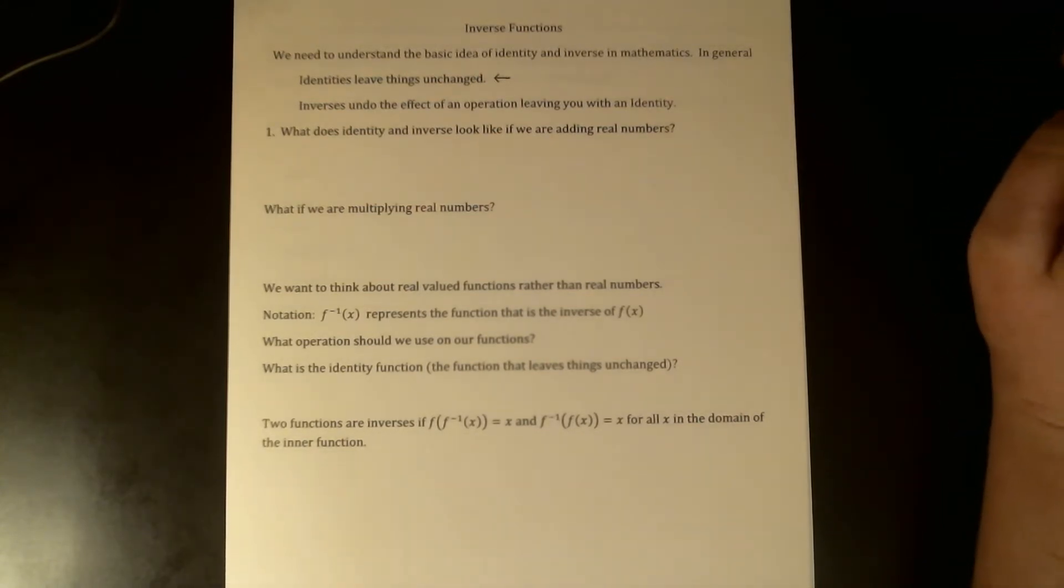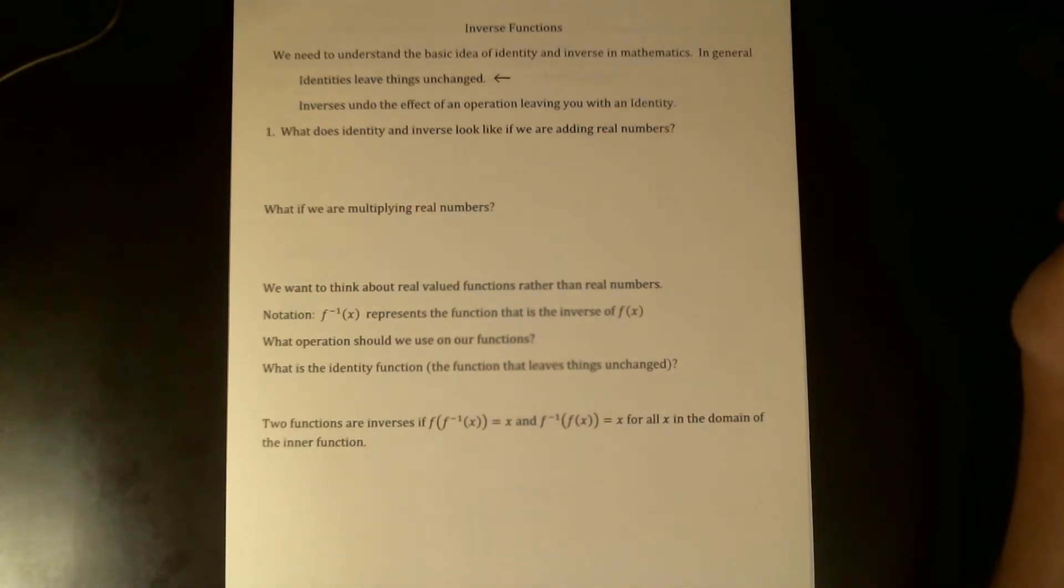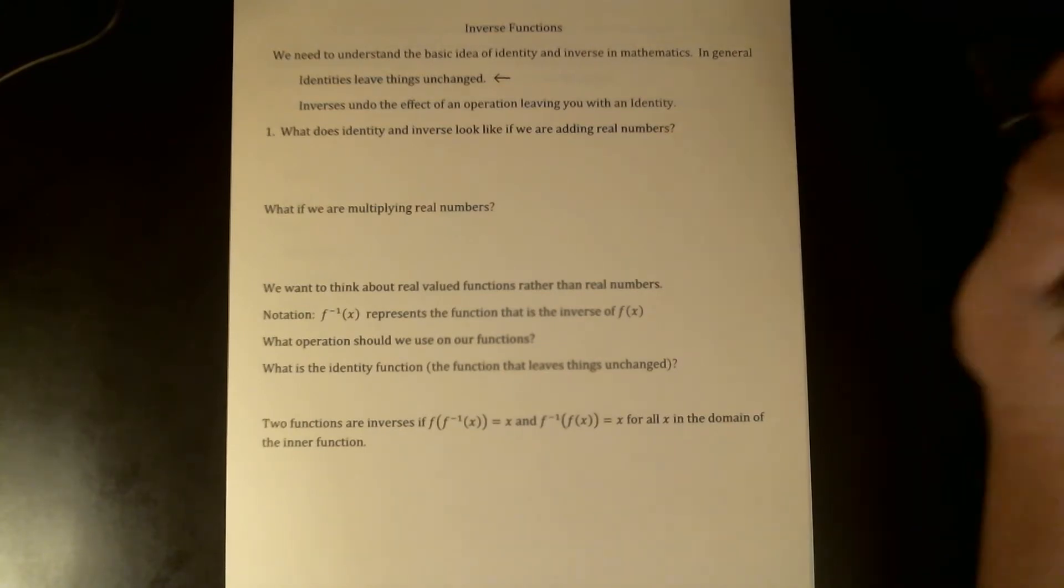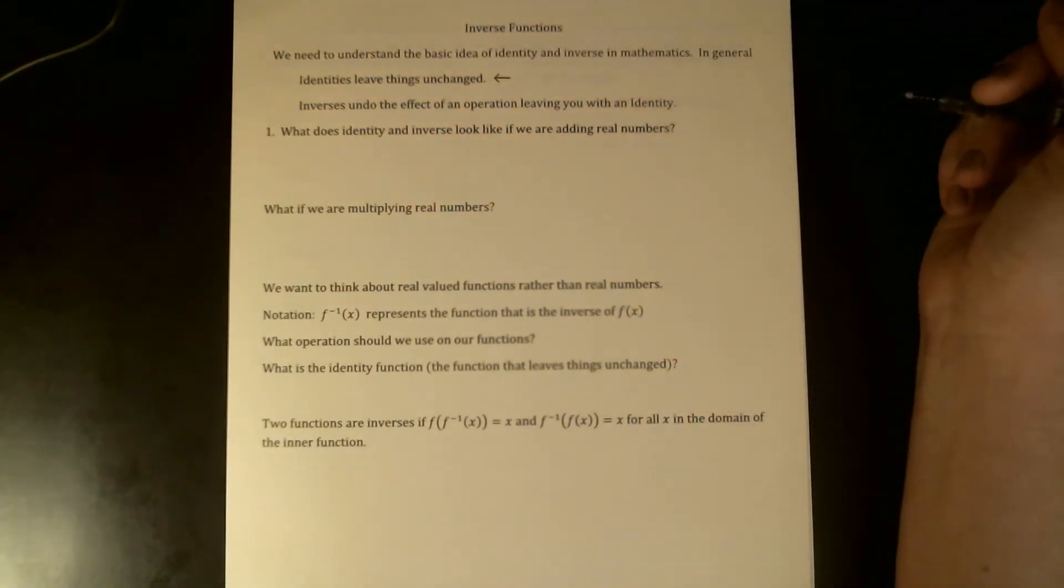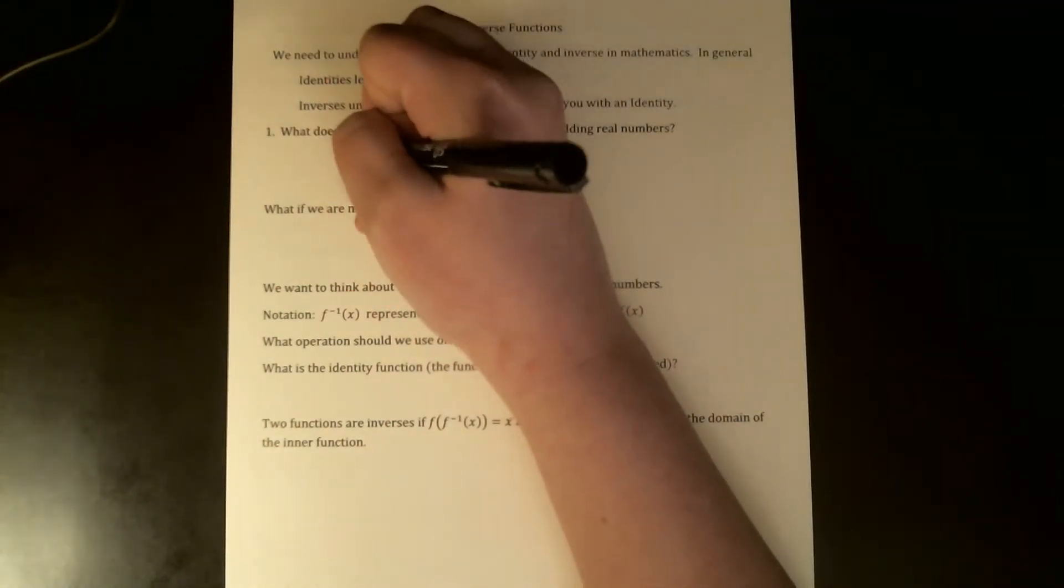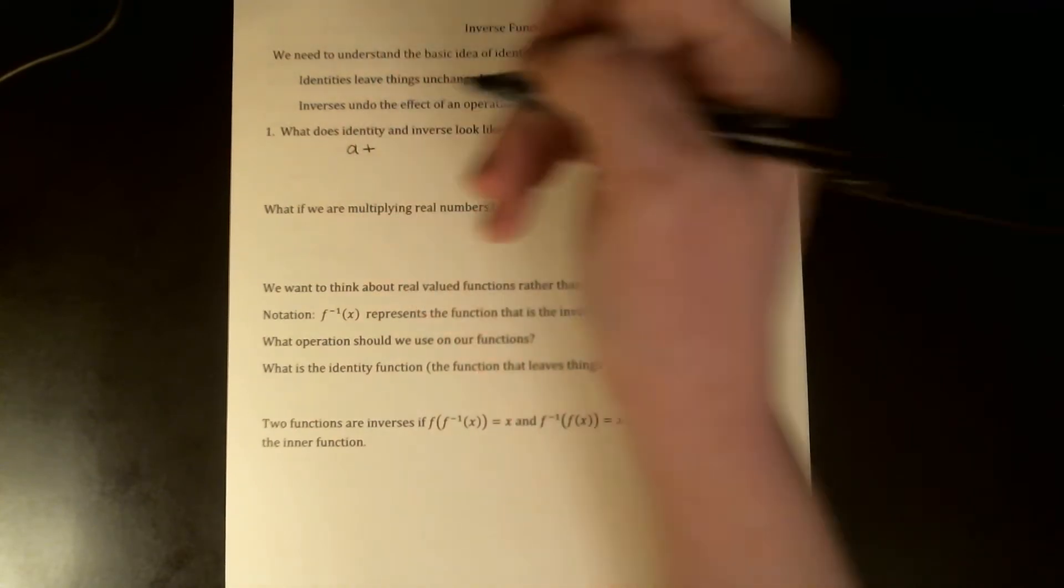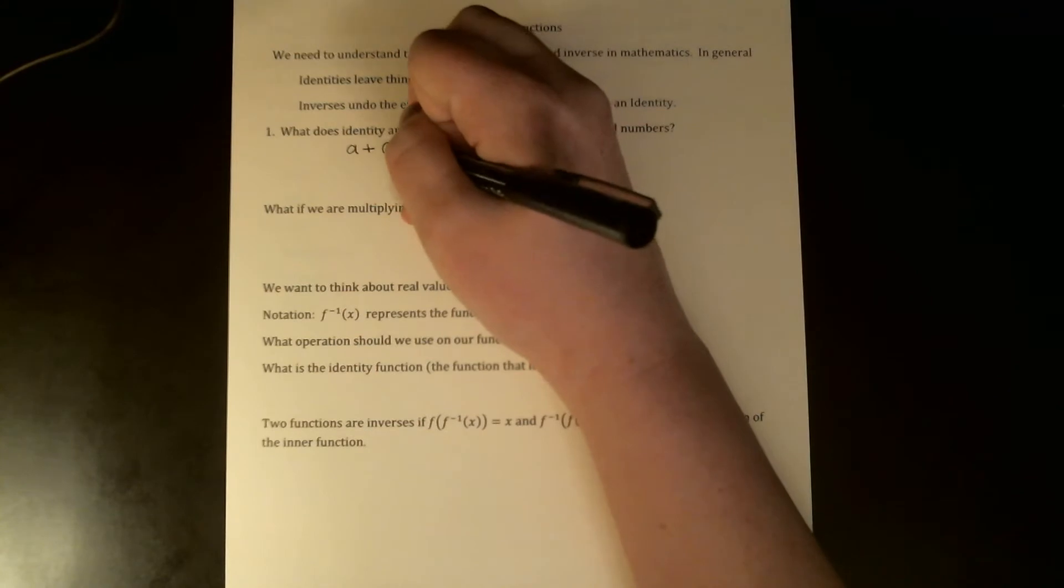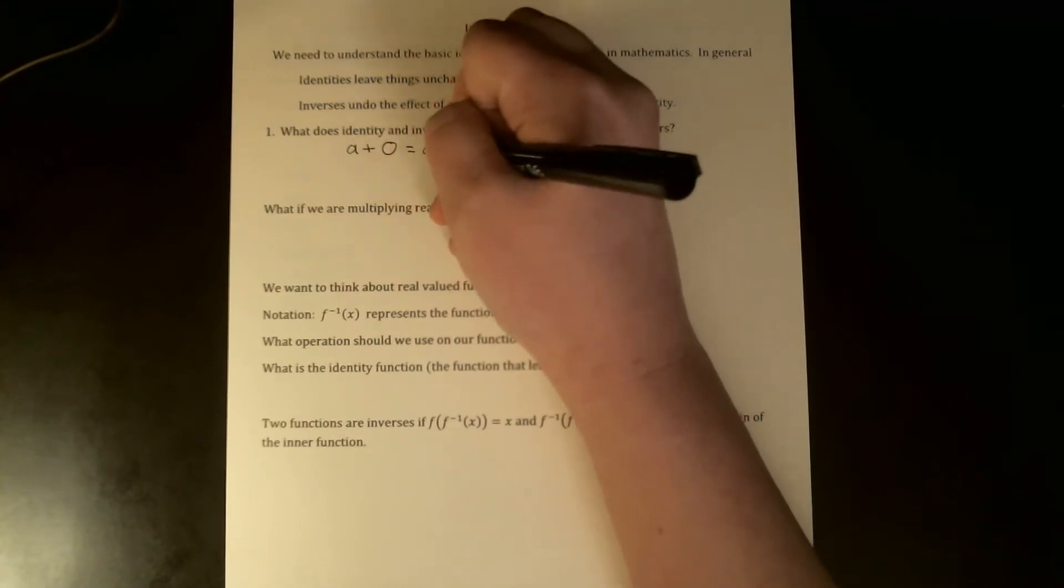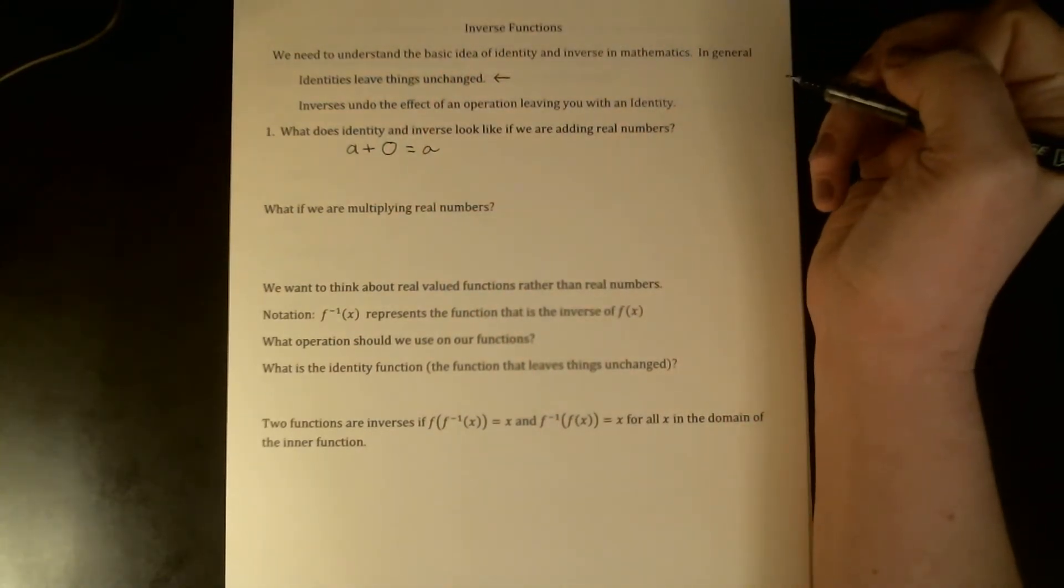Just to do some warm-up examples, I would like to look at addition and multiplication of real numbers first, and then we'll get right into functions after that. If we are adding two real numbers, the first question we have to ask is what is an identity if we're adding real numbers? What could I add to any real number that would leave it unchanged? The answer is zero. If I add zero to any real number, I get back exactly what I started with.